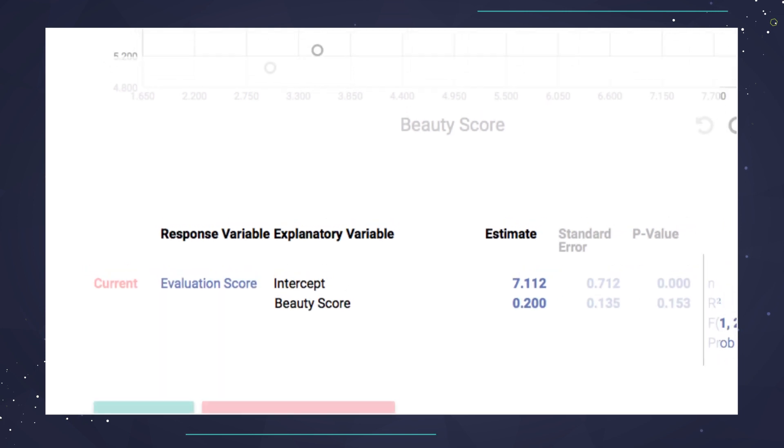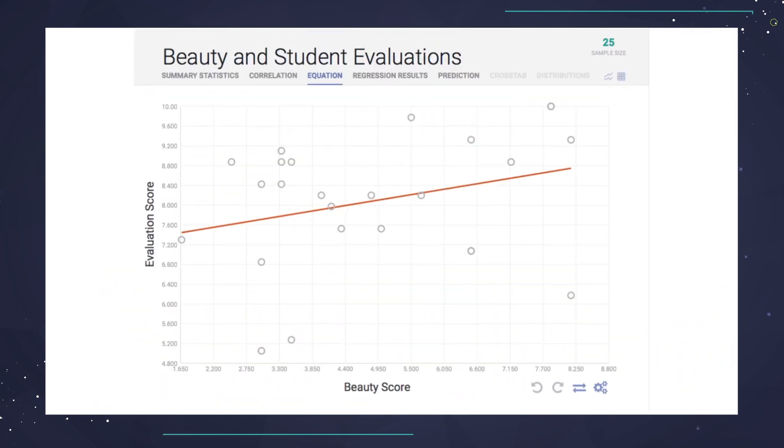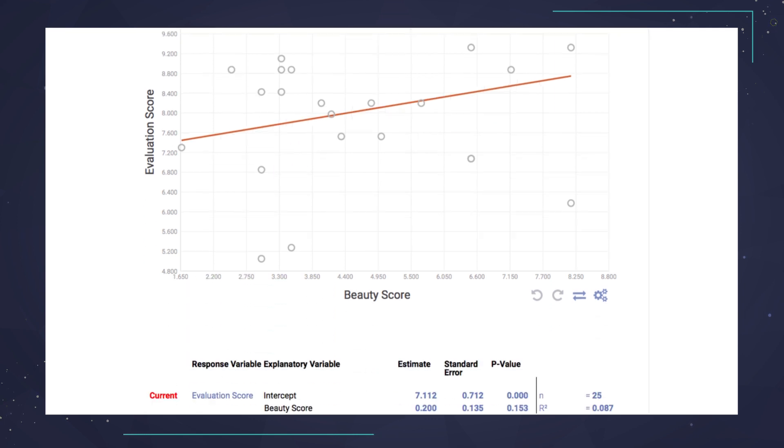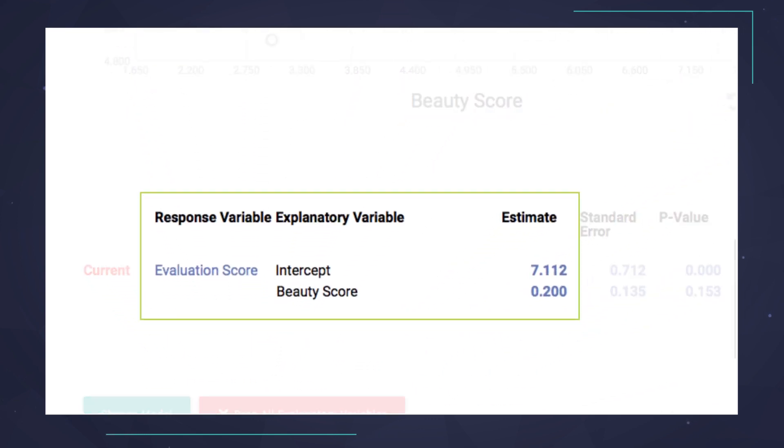What if she improves her beauty score by twice as much, from a 2 to a 4? Now, we multiply the change in the explanatory variable, 2, by the slope, 0.2, to obtain the expected change in the evaluation score. So, when a professor improves her beauty score by 2 units, we are predicting a 0.4 improvement in the evaluation score.